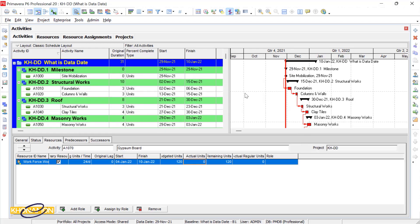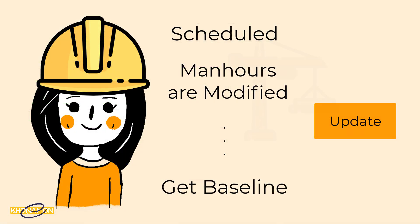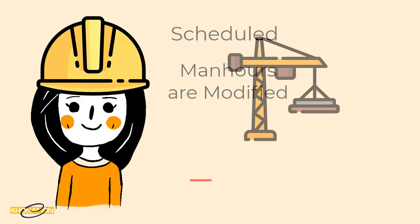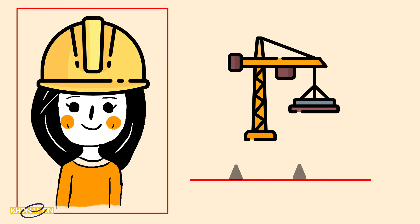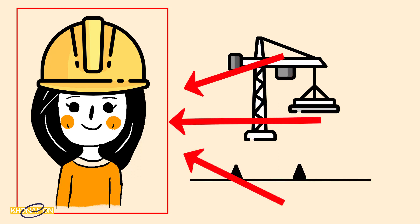The second phase is updating. The project is started and daily progresses toward its target. It faces challenges. You, as a planner, should be aware of these, because later all points will show you the full picture.